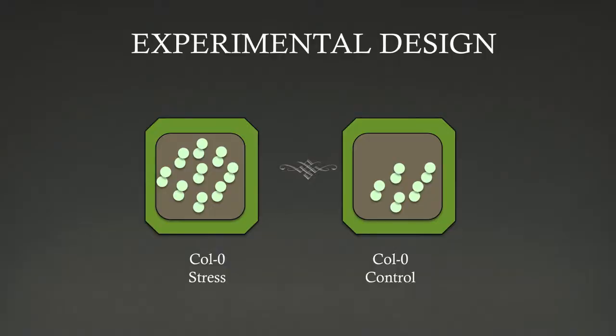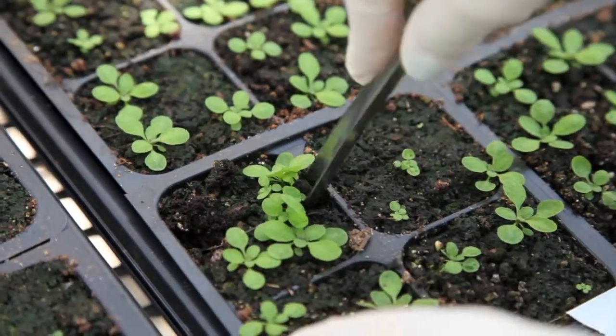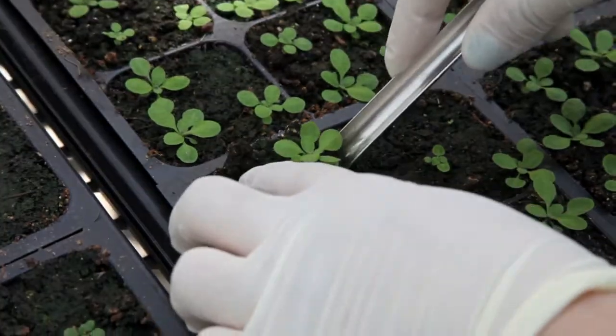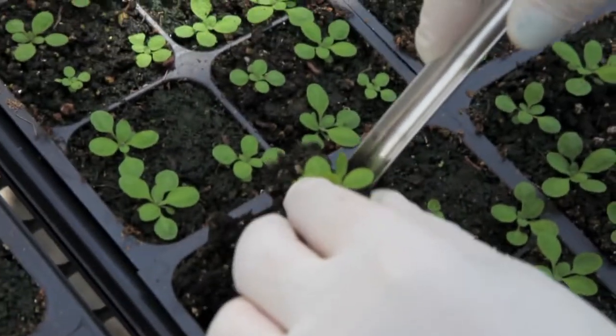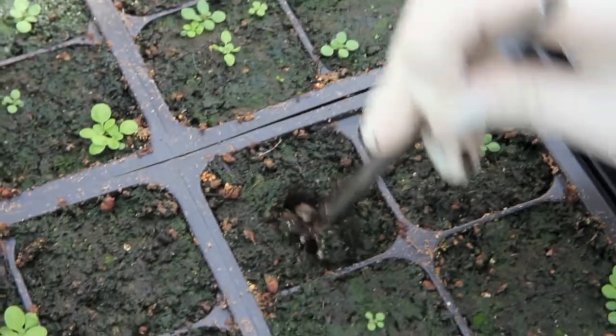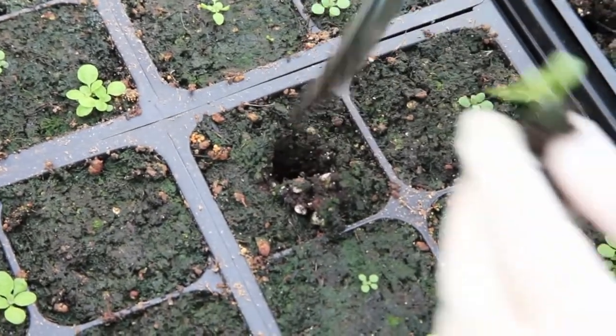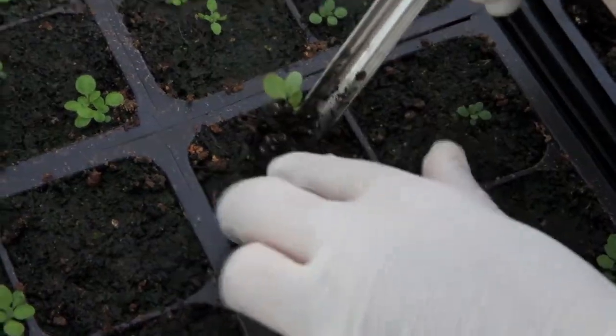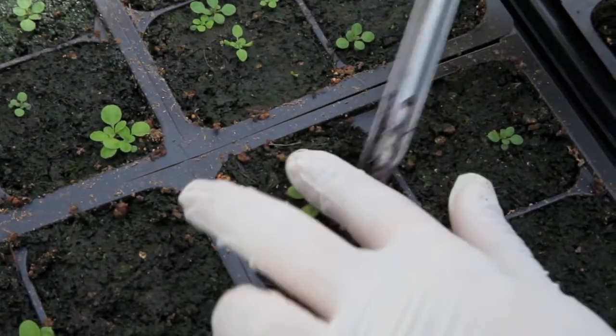As the seeds germinate and grow, you may notice uneven number of plants between your trays meant for stress or control treatment. Depending on the size of the differences, you may choose to transplant seedlings to make the number of plants in the same genotypes more even across treatments. In order to transplant seedlings while they're still young, use a laboratory scoop or other tool to pick up the entire plant with soil. Avoid disrupting the roots and place the seedling in another pot of soil with a similar sized opening. Make sure to gently pat down the soil and water the area to ensure that the transplant takes.